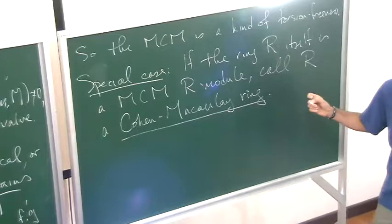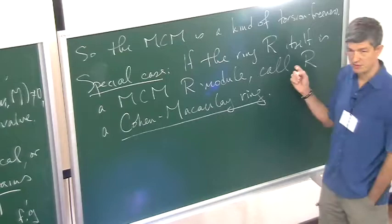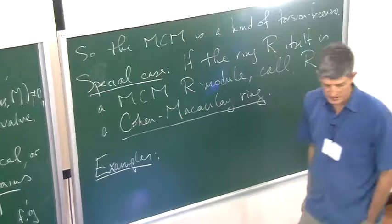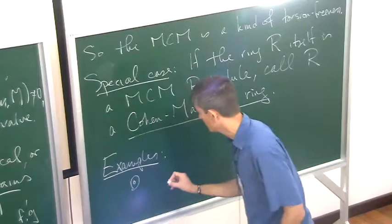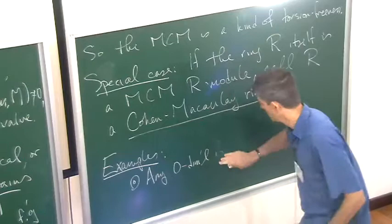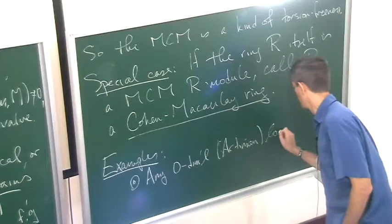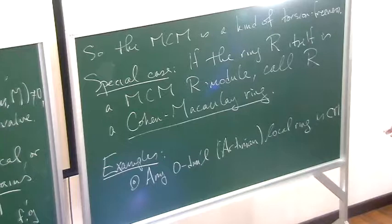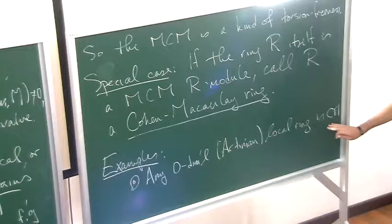There's a famous paper of Bass on the ubiquity of Gorenstein rings, but every Gorenstein ring is Cohen-Macaulay. So Cohen-Macaulay rings are even more ubiquitous than ubiquitous things. So let's do a few examples. Example zero, let's talk about small dimensions. Any zero-dimensional local ring, so I mean Artinian, is automatically Cohen-Macaulay. So we get, for example, all finite-dimensional algebras over a field. All of mine are commutative of course. Those are all Cohen-Macaulay.